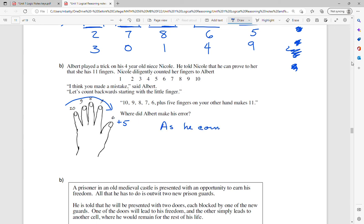Well, he's only said five numbers. So as he counts backwards, he's only said five numbers. So five plus five equals 10. Nicole does not have 11 fingers. He's trying to trick her.